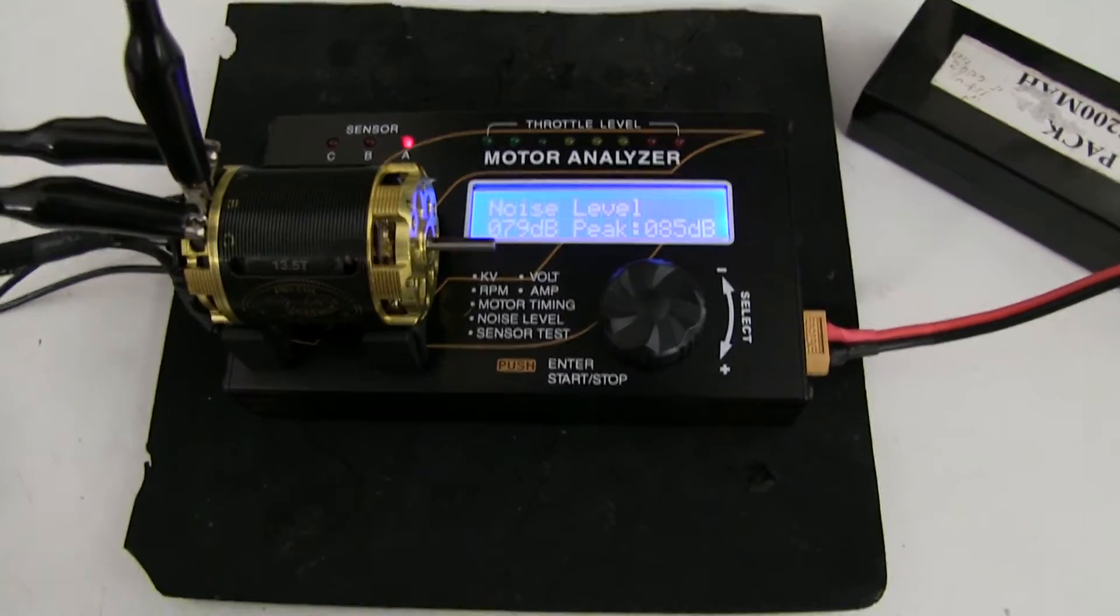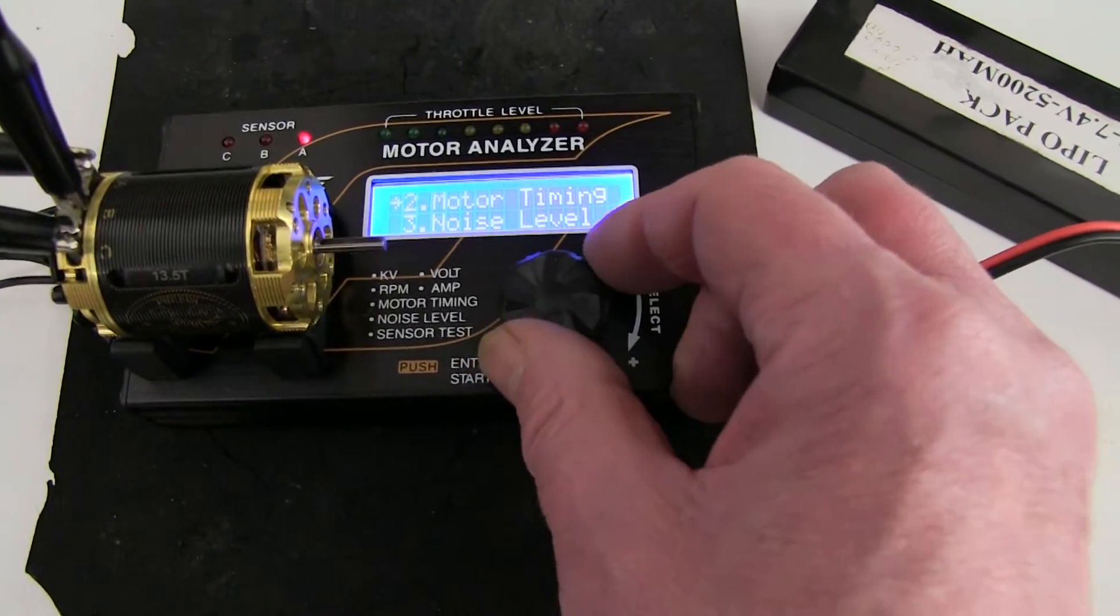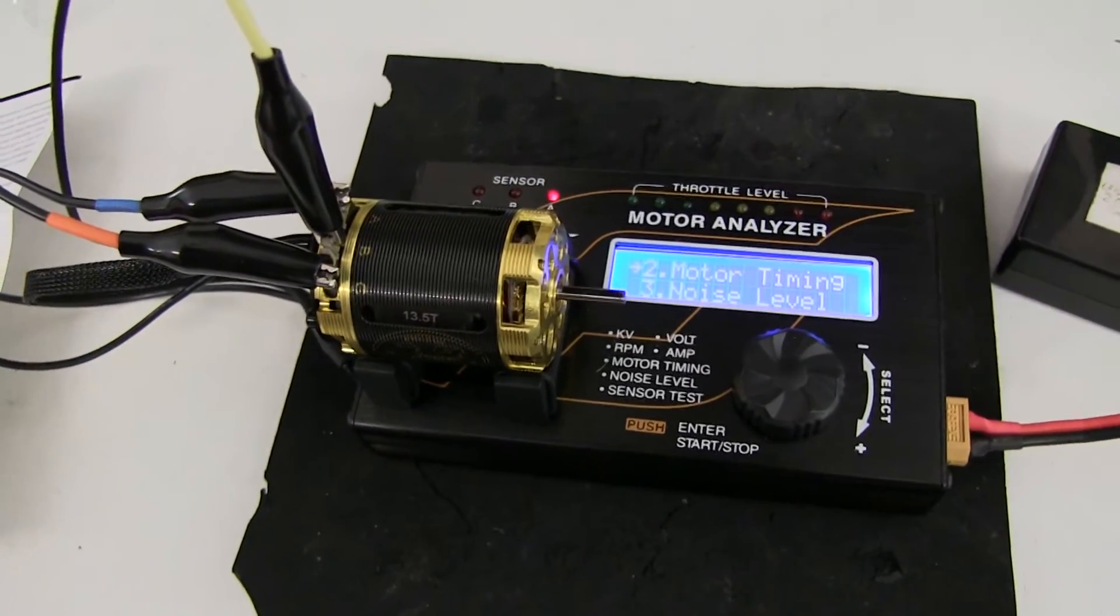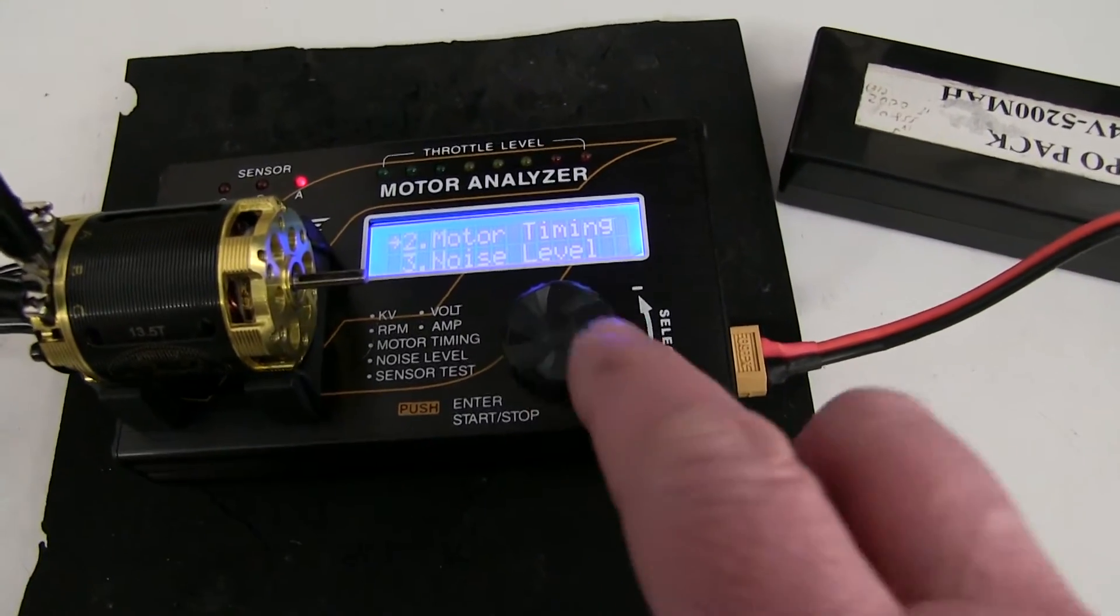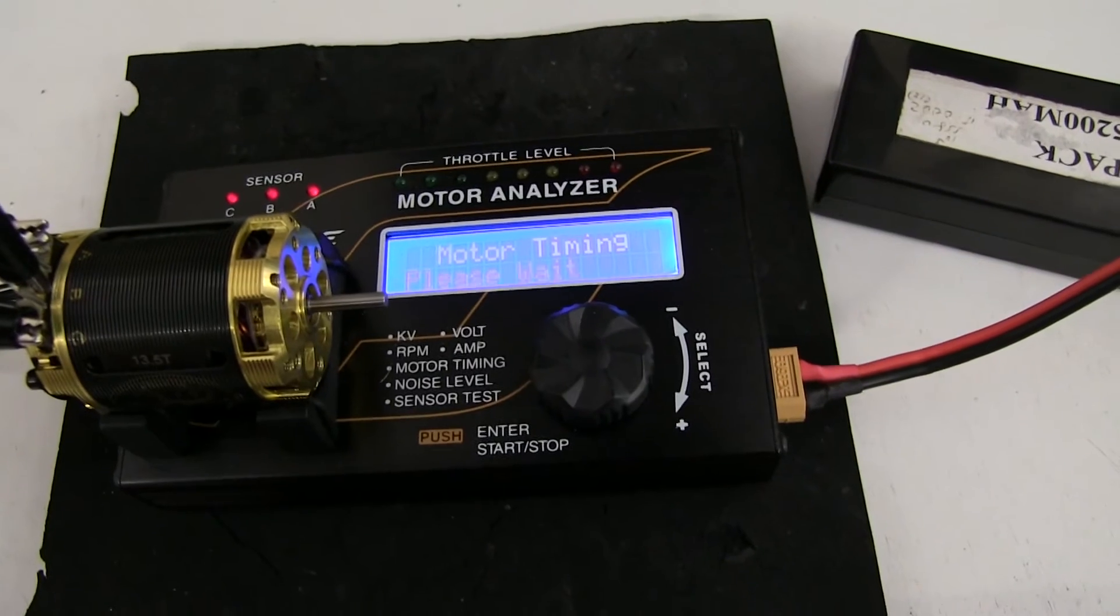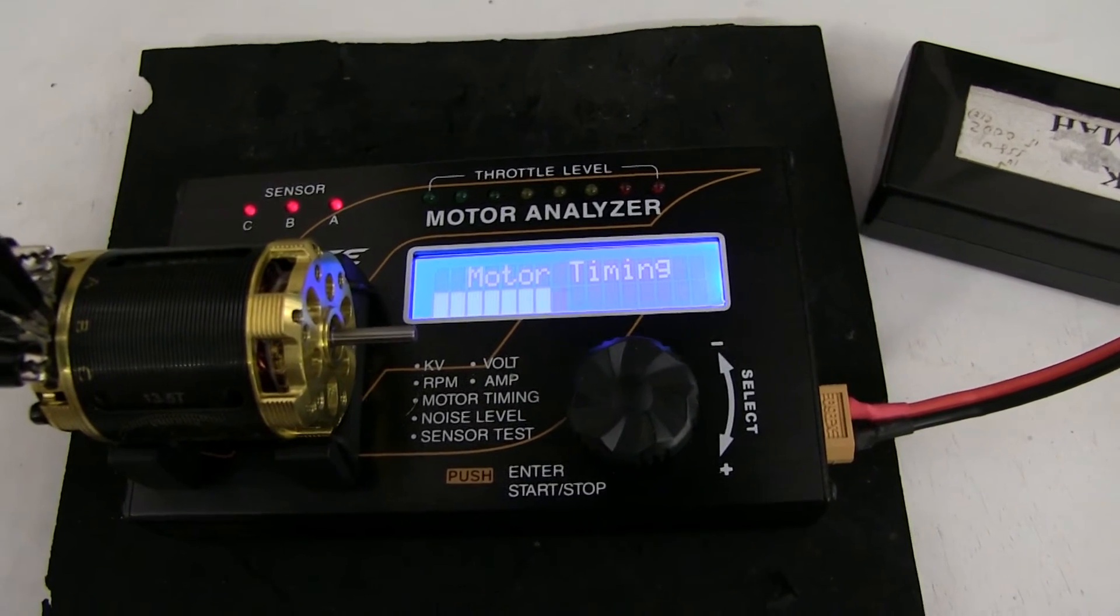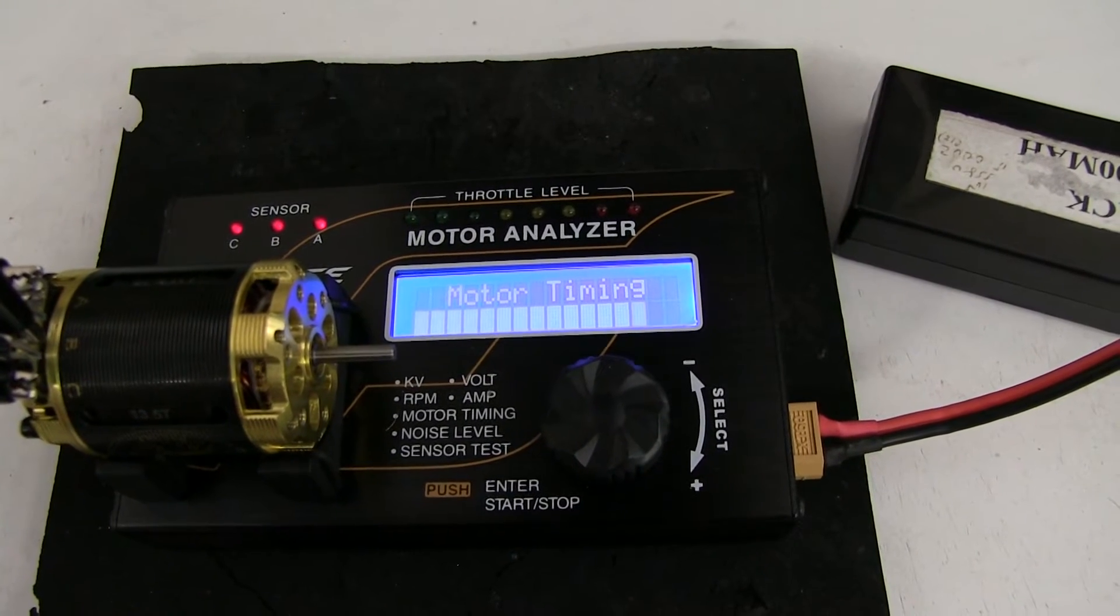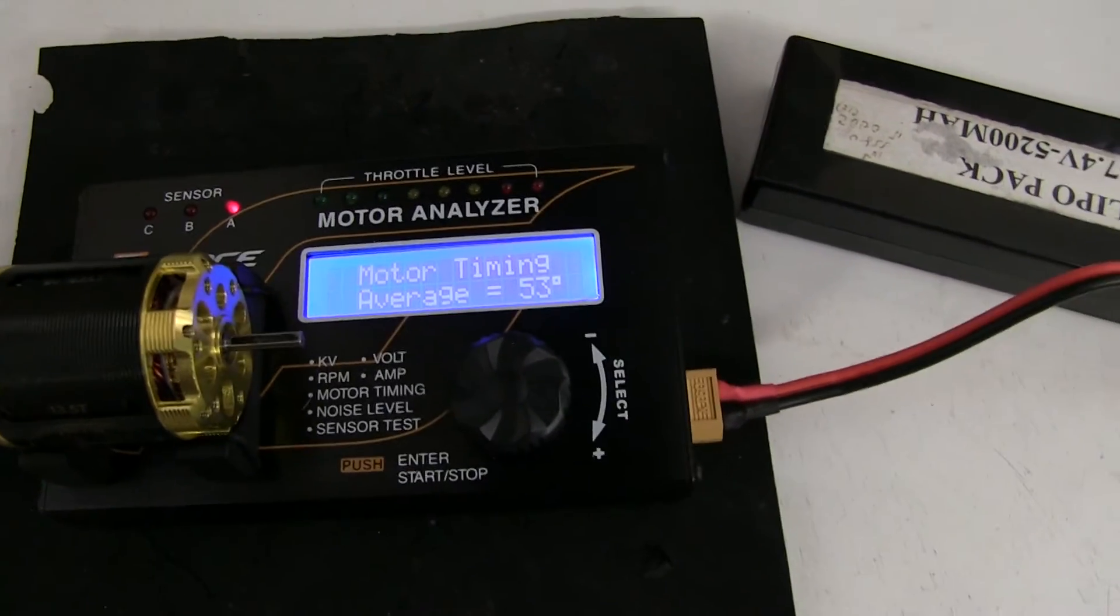So, what I'll do now is I'll just turn the end bell on this motor to the max. And we'll see what the maximum timing I can get. Okay, I've set the timing on the end bell to the maximum position, or plus, max. And we're going to do the timing again, see what we get. So, you press this, and press to start. Okay, 53 degrees.